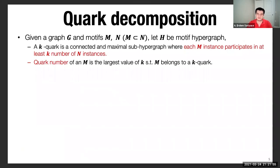More formally, we define this framework as quark decomposition. Given a graph and a pair of motifs M and N, let H be the motif hypergraph as I described. K quark is defined as the connected and maximal sub-hypergraph where each M instance participates in at least K N instances. Just like the core and truss number, we defined the quark number of M, small motif M, as the largest value of K such that M belongs to a non-empty K quark.